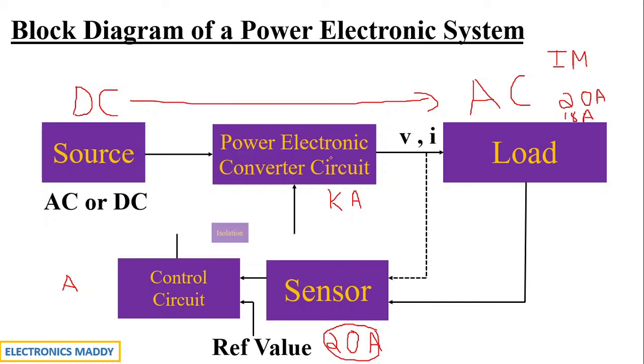For that, we need an isolation block. So the isolator basically isolates the control circuit and the power electronic converter circuit. And in some cases, we may also need an amplifier to amplify the signals. For example, as I mentioned, the control circuit will be having microamperes or milliamperes of current, and this needs to be amplified. And that is why we will be requiring an amplifier block as well. And that in turn will be given to the input of a power electronic converter circuit.